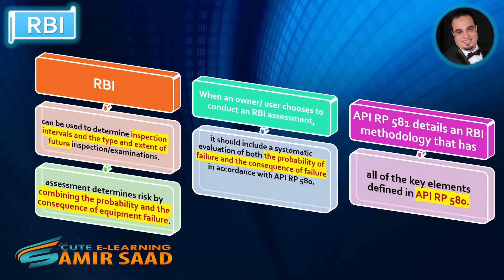Risk-based inspection (RBI) can be used to determine inspection intervals and the type and extent of future inspection examinations. An RBI assessment determines risk by combining the probability and the consequence of equipment failure. When an owner-user chooses to conduct an RBI assessment, it should include a systematic evaluation of both the probability of failure and the consequence of failure in accordance with API RP 580. API RP 581 details an RBI methodology that has all of the key elements defined in API RP 580.